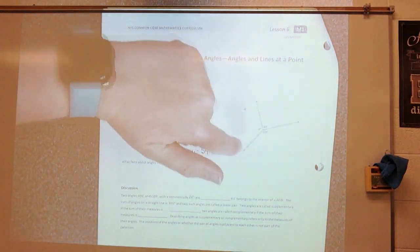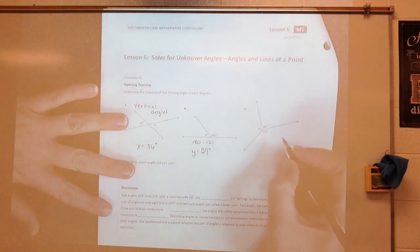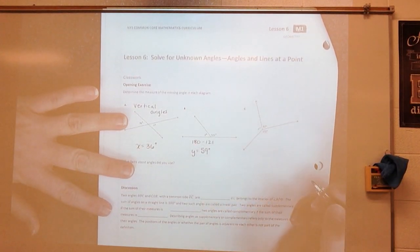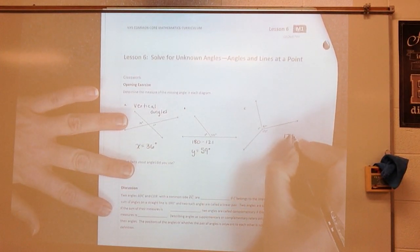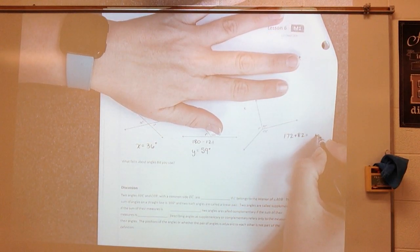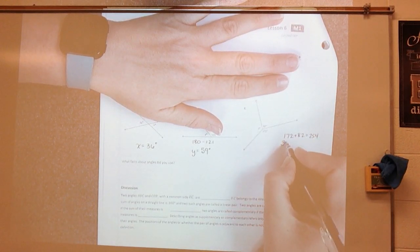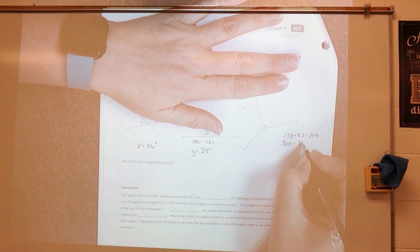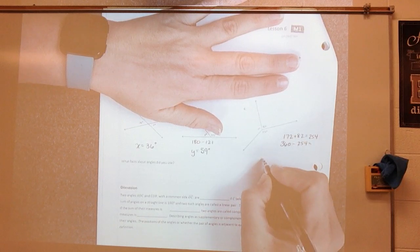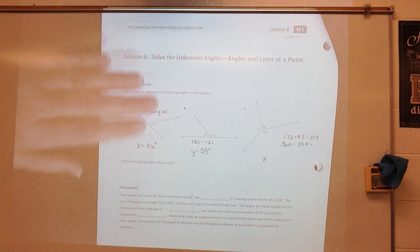Looking at this, all three angles create a circle. The measure of a circle is 360 degrees. So I would add 172 and 82, which would give me 254, and then I would subtract that from 360. So that's going to tell me that z is equal to 106.